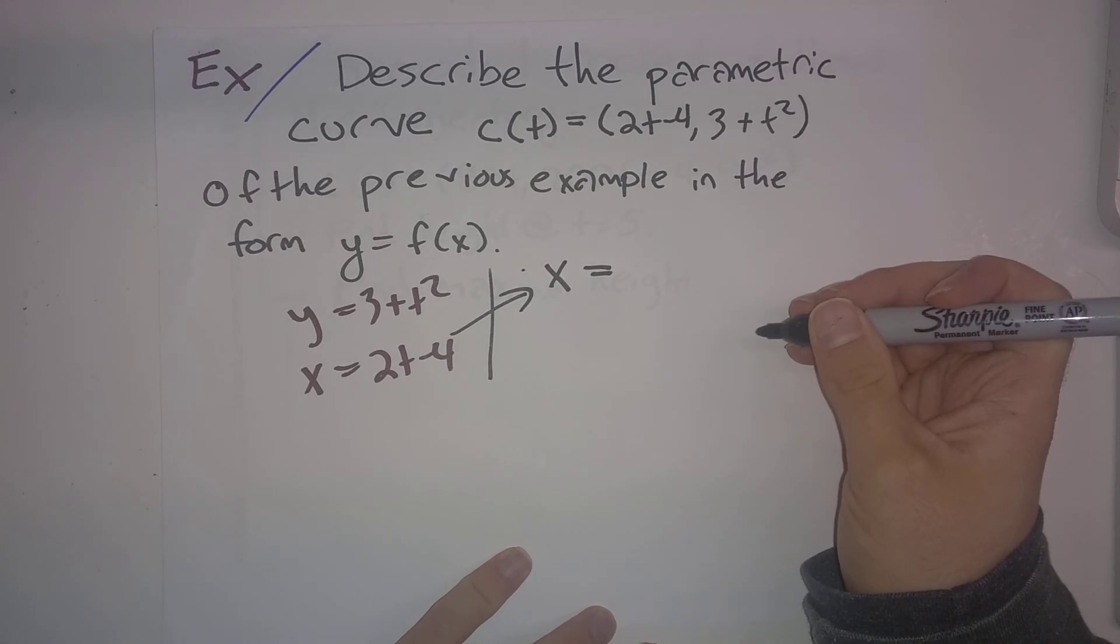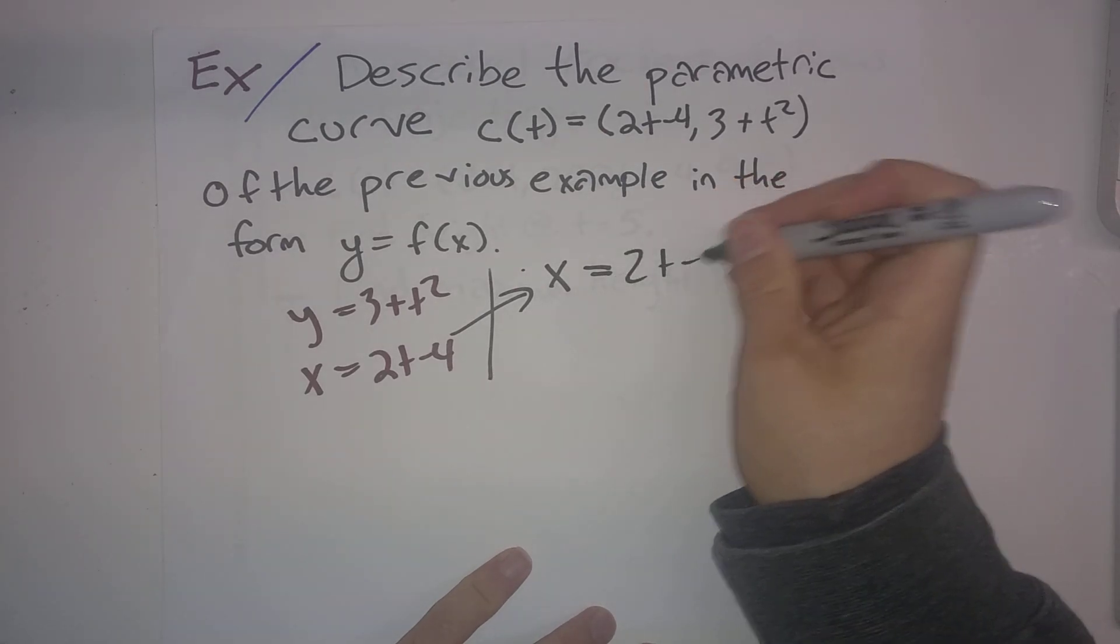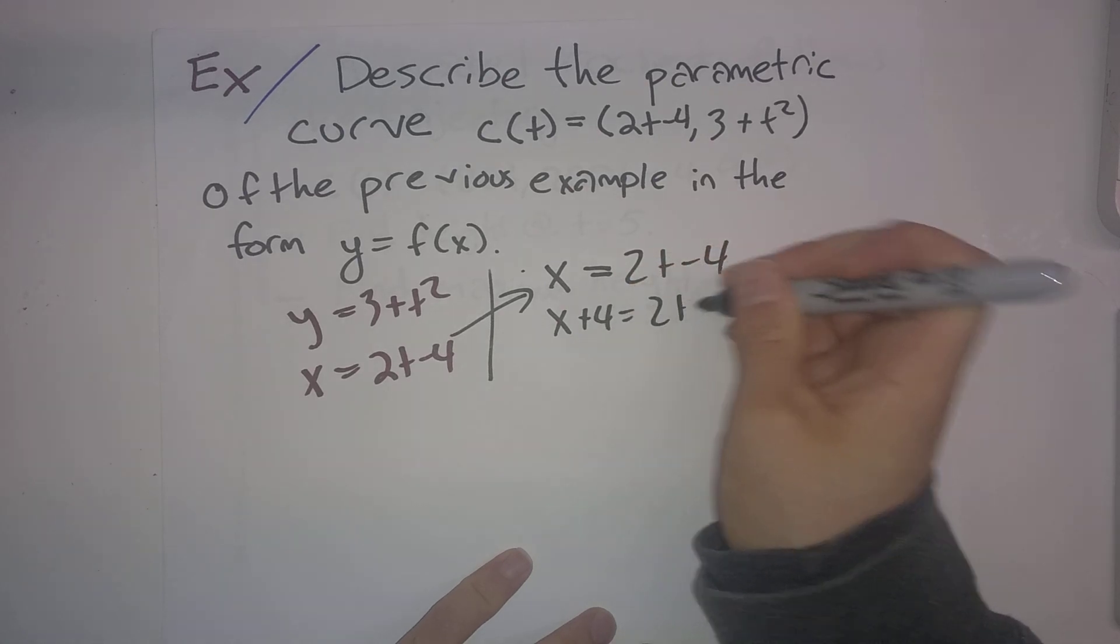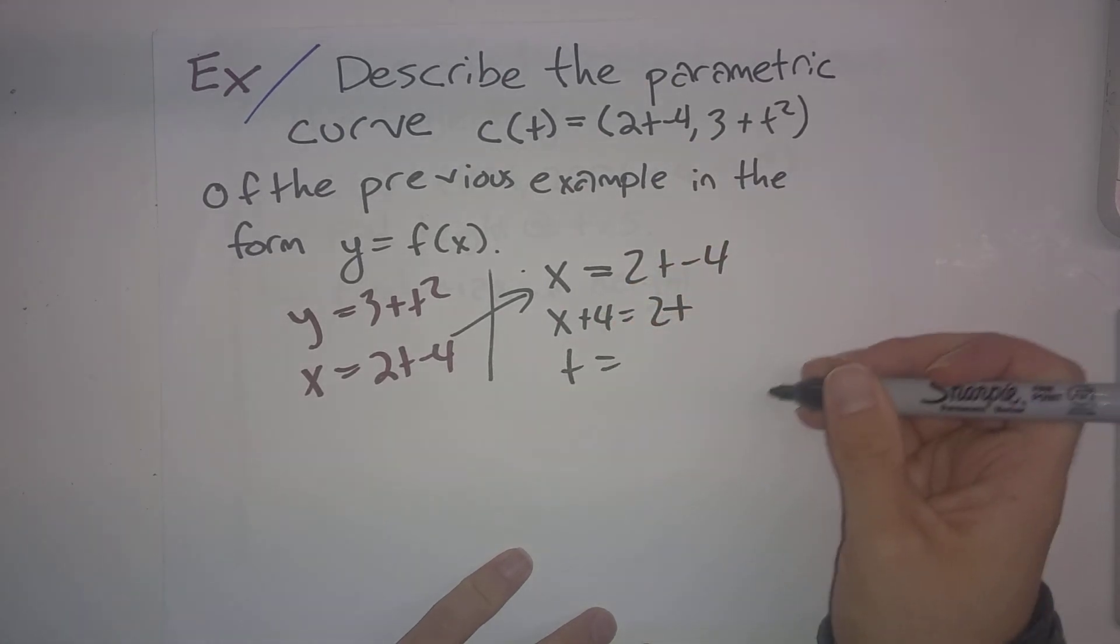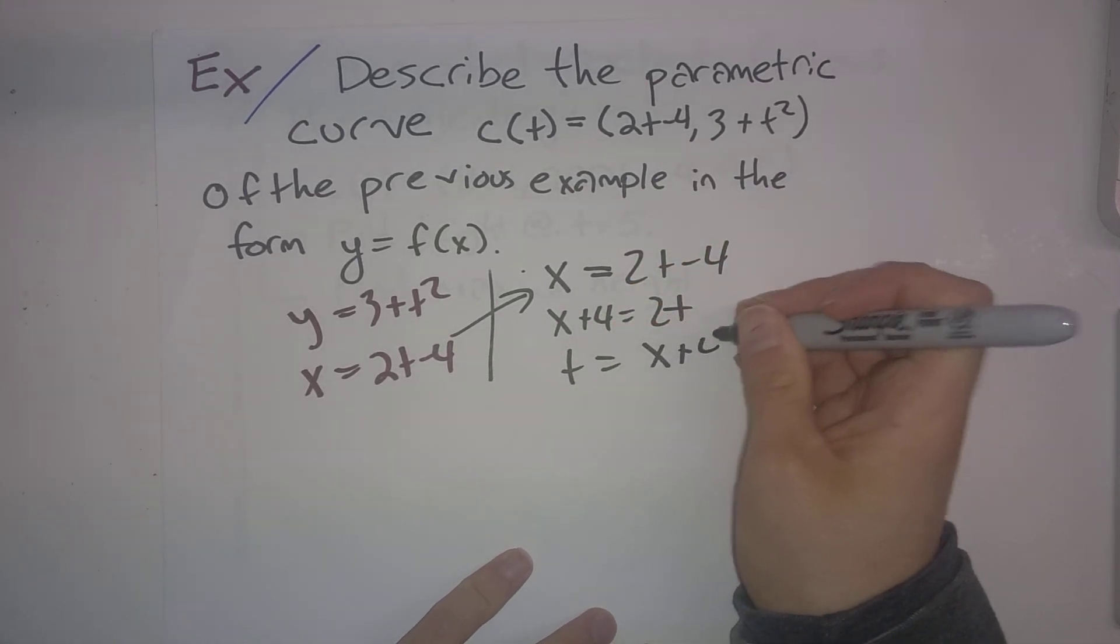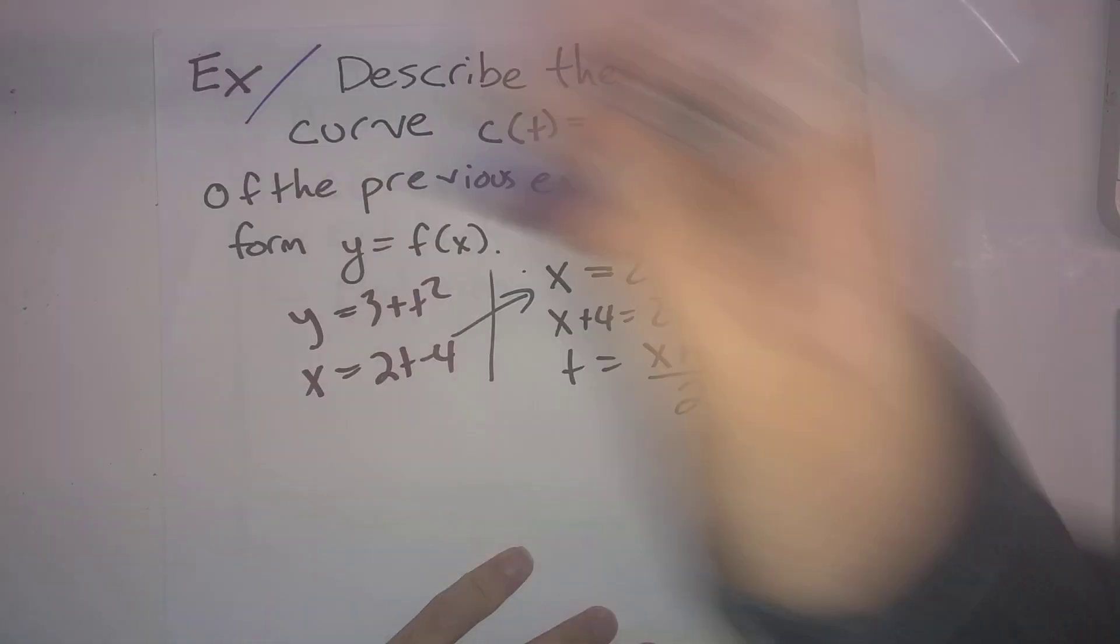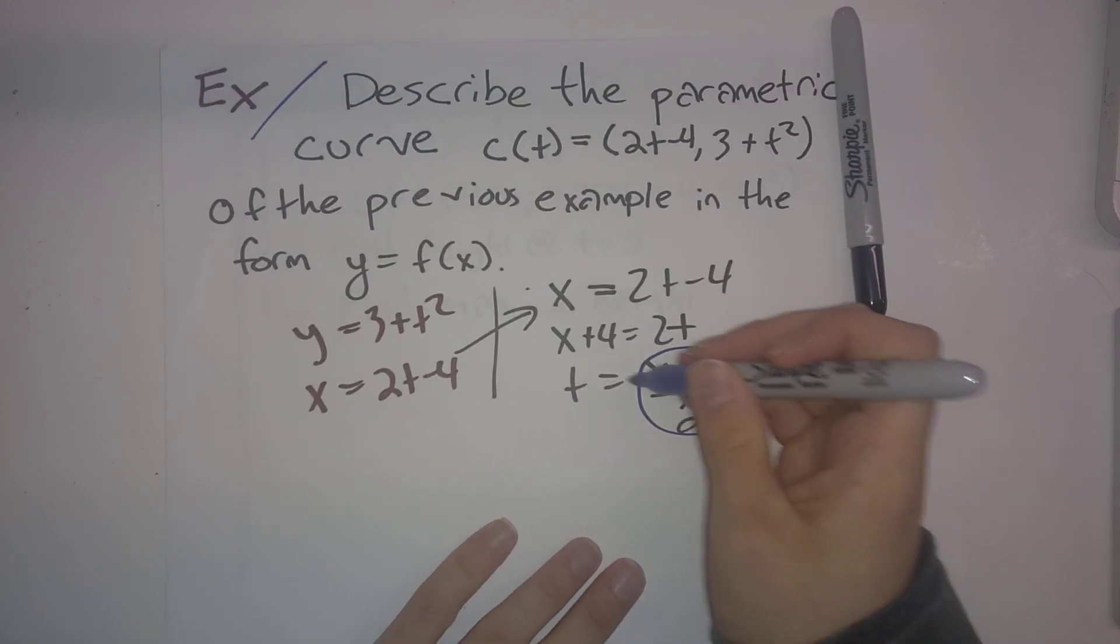x = 2t - 4. I guess I'm just recopying it. Let's add 4 to both sides. And let's divide by 2. So t = (x+4)/2.